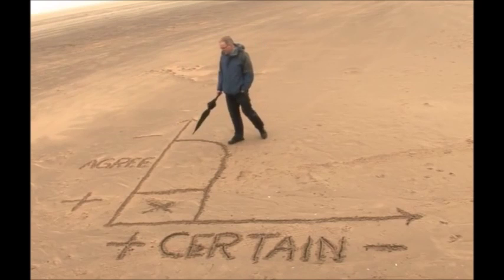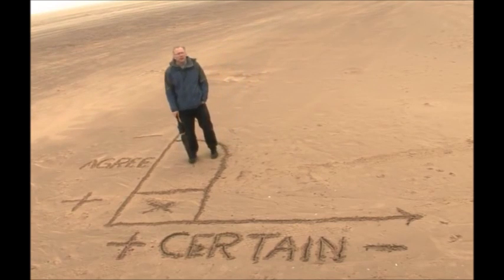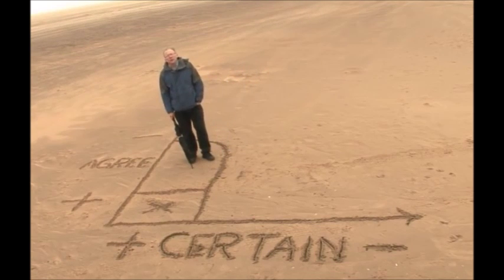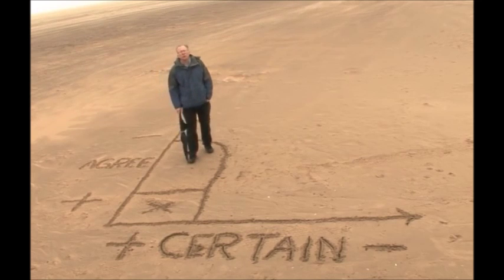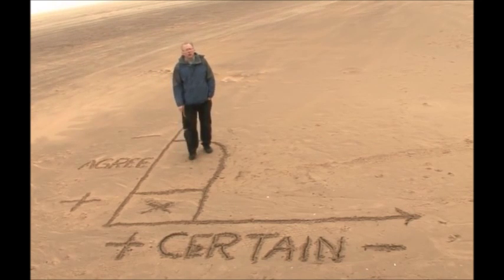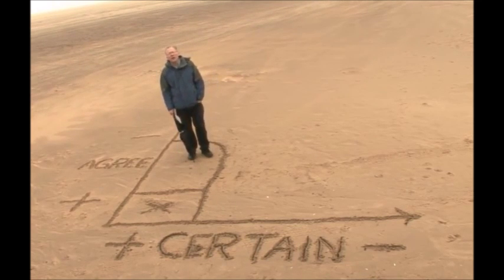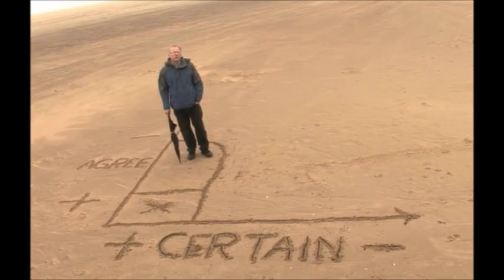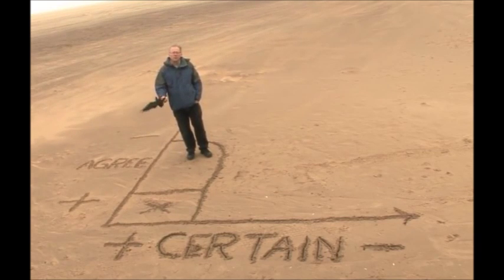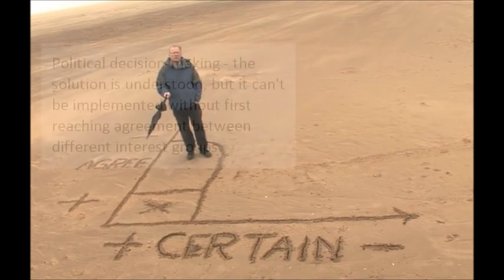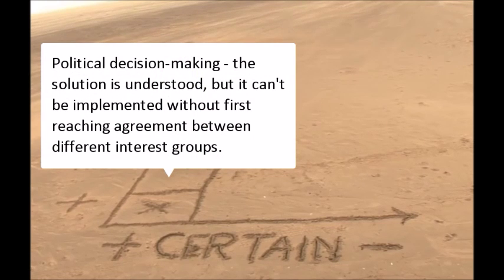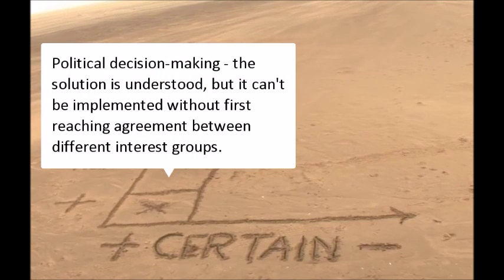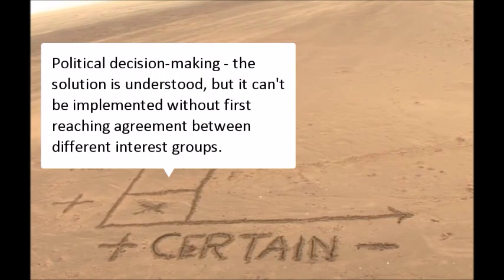Let's assume the experts know what the problem is and they know how to solve it, but different actors want different things. Here we begin to move into areas of disagreement and political decision making. Different groups have to be brought together to discuss it, bargains have to be made, and agreements have to be reached between different groups. The policy isn't confusing — it's just that different groups want different things. Really, we're talking about political decision making here.